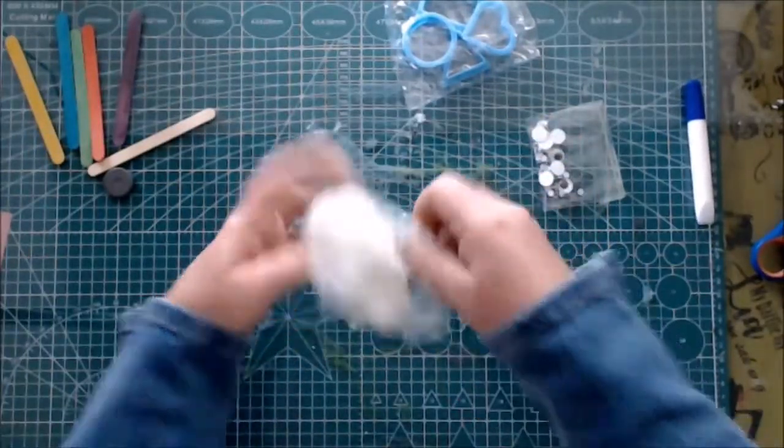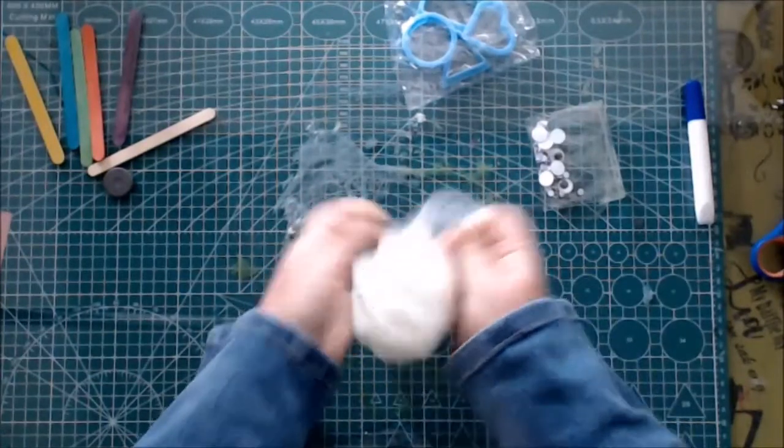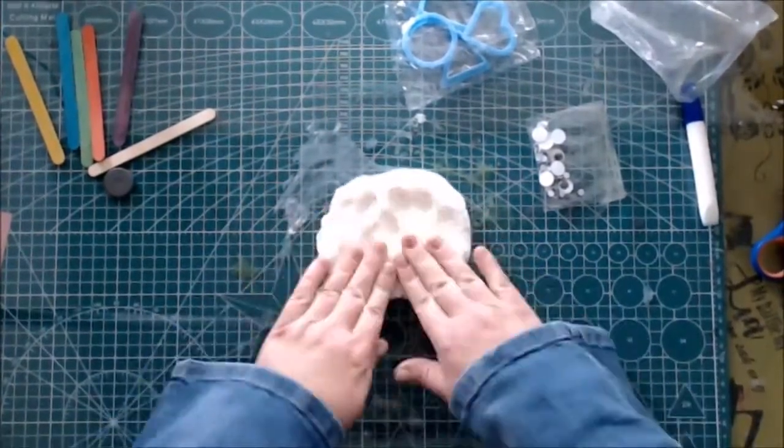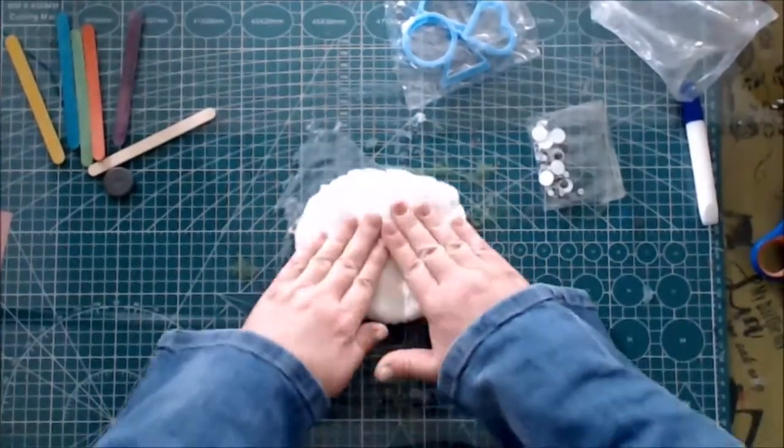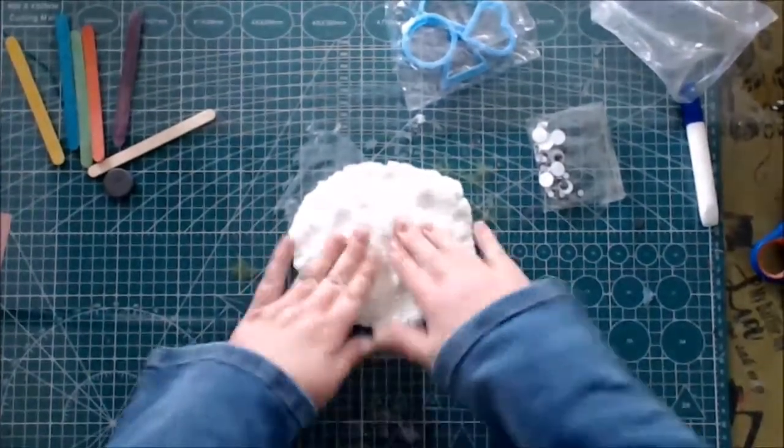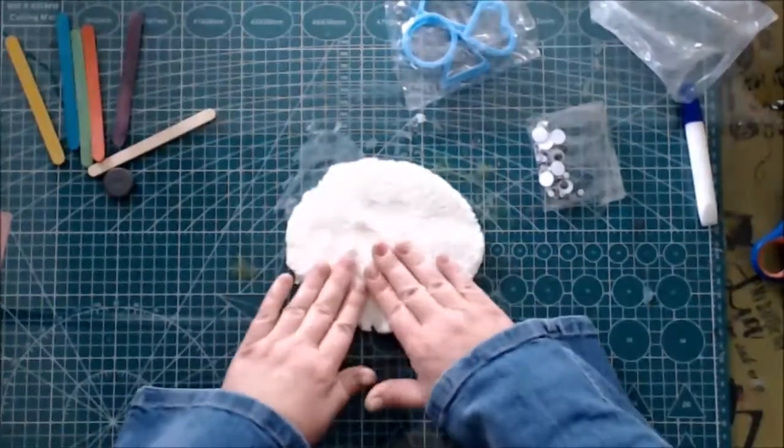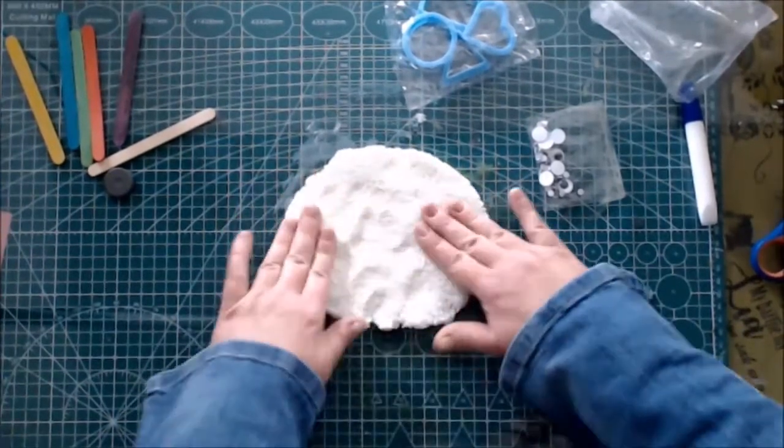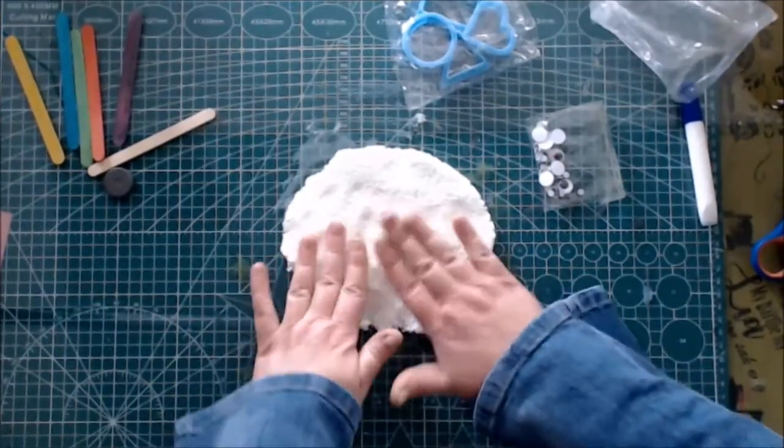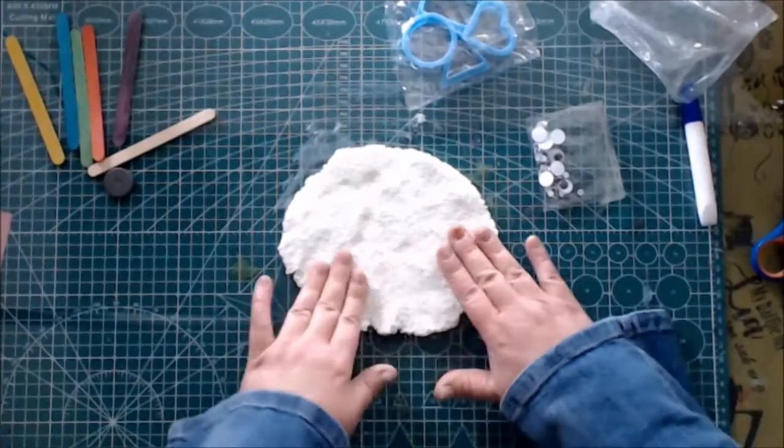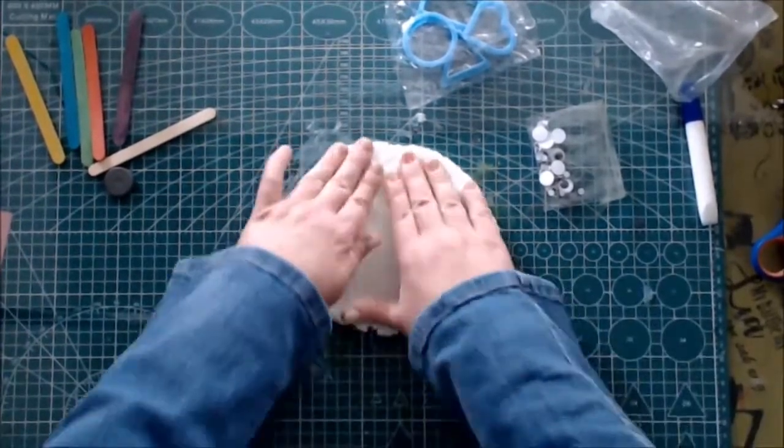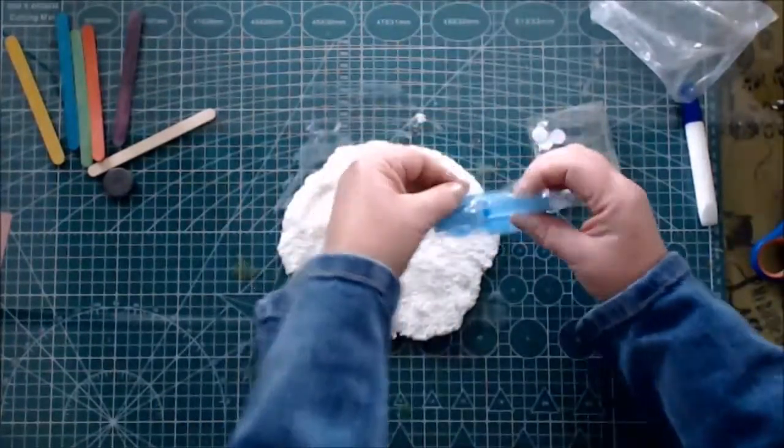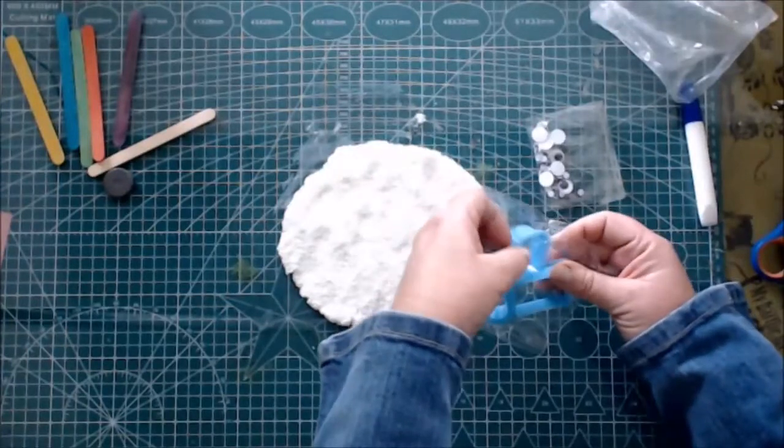Then you can open the packet with the white fun foam. These are really amazing because you can shape it into almost any shape and it's got nice texture. I want you to squish it down and press it flat until it's just thick enough so that we can make clouds from it.